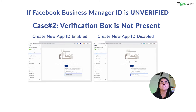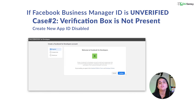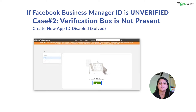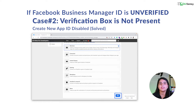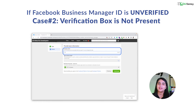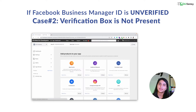In case Create a New App ID is disabled, you can put a cursor on the lock icon and click on Confirm Account. Then a new dialog box will open — click on Continue and then Create a New App ID. Select Business as the app type and click on Next. Next, add the brand name in the Display Name, enter the business email ID, select an account, and click on Create App. Enter your Facebook password and submit.